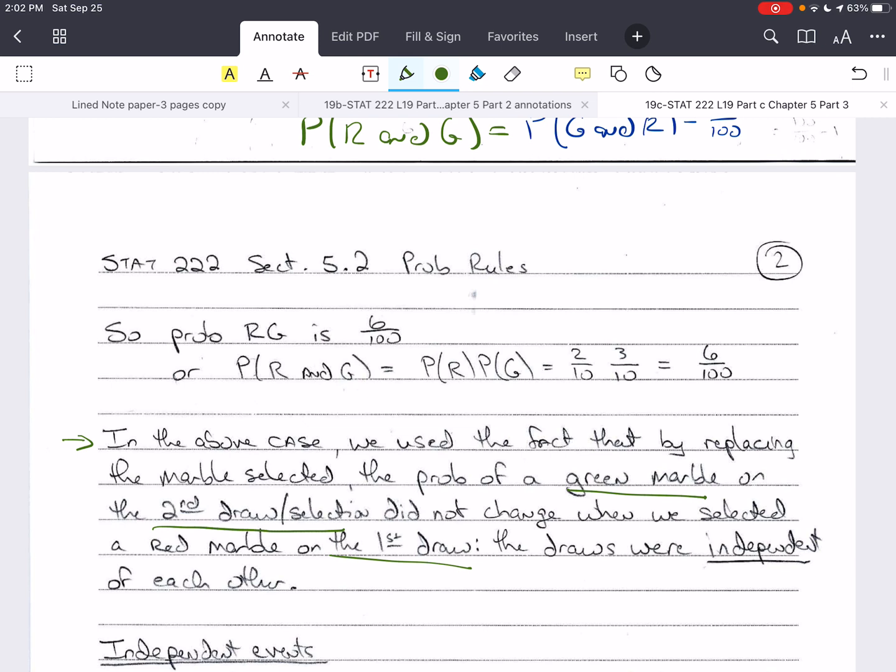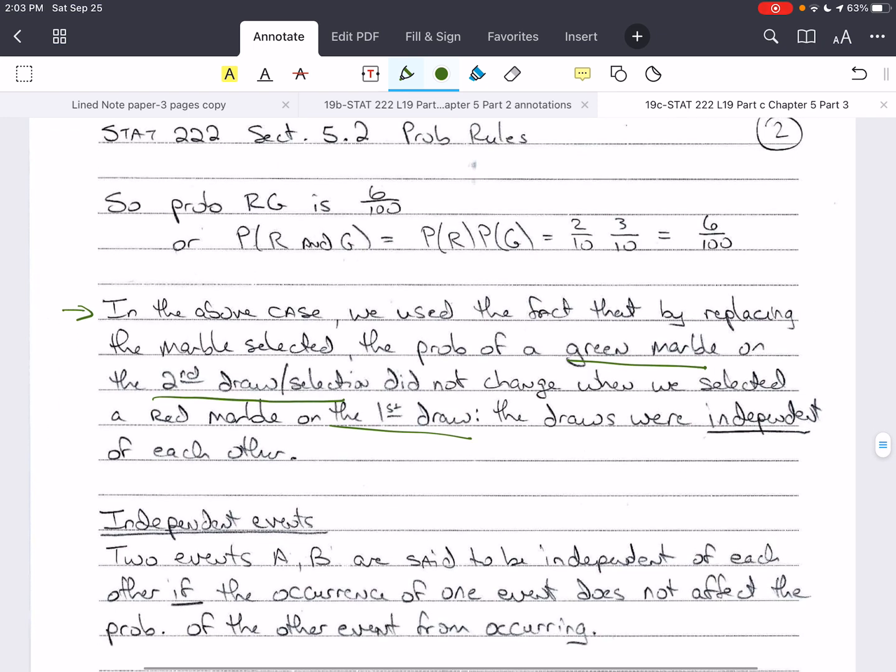In other words, each selection or draw was independent of each other, and so this brings us to a definition of two independent events. Two events, A and B, are said to be independent of each other if the occurrence of one event does not affect the probability that the other event will occur. So, if A occurs, the probability of B occurring after A does not change. Likewise, if B occurs, then the probability of A occurring after B will not change. It stays the same.